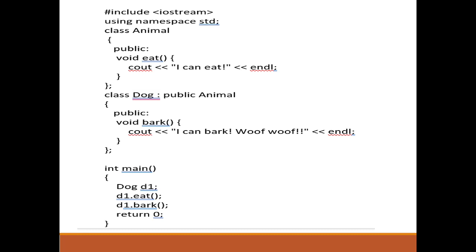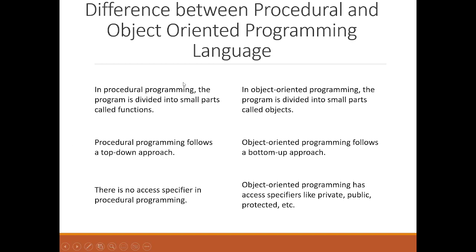Now let's look at the key differences. First: in procedural programming, the program is divided into small parts called functions, whereas in object-oriented programming it is divided into small parts called objects. Second: procedural programming follows a top-down approach, whereas object-oriented programming follows a bottom-up approach.